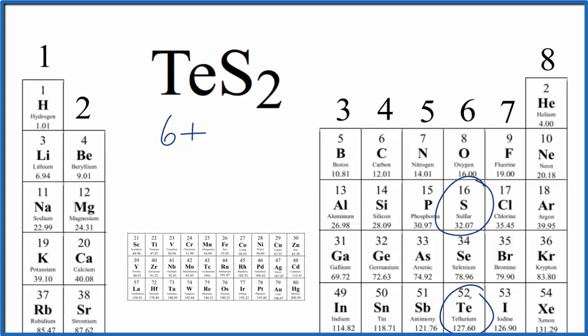Sulfur, that's in the same group as tellurium here, so that'll also have six valence electrons, and we have two sulfurs, so 6 plus 12, 18 total valence electrons for the TeS2 Lewis structure.